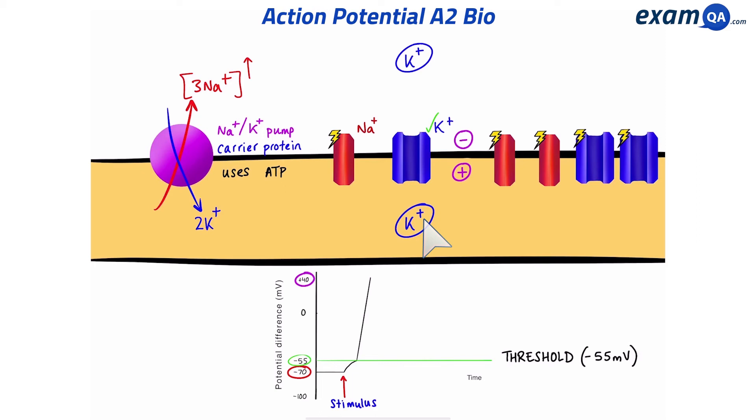We can see the outside is more negative than the inside. So that means potassium ions will leave the neuron to go to the negative area. So potassium ions are moving down the electrochemical gradient.